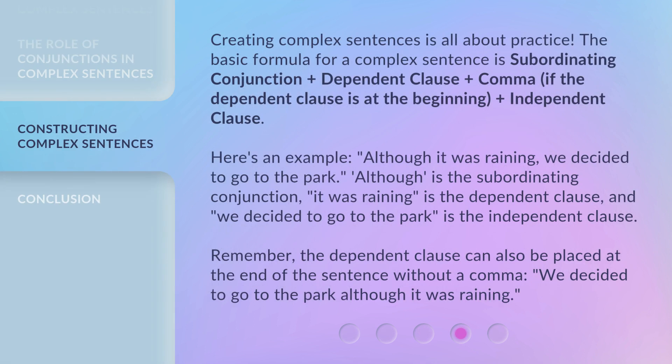Creating complex sentences is all about practice. The basic formula for a complex sentence is: subordinating conjunction + dependent clause + comma (if the dependent clause is at the beginning) + independent clause. Here's an example: 'Although it was raining, we decided to go to the park.' 'Although' is the subordinating conjunction, 'it was raining' is the dependent clause, and 'we decided to go to the park' is the independent clause. Remember, the dependent clause can also be placed at the end of the sentence without a comma: 'We decided to go to the park, although it was raining.'